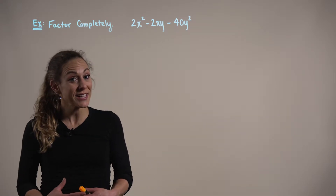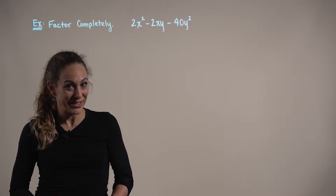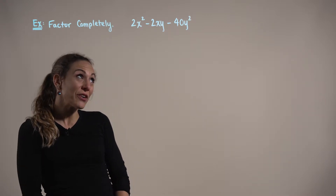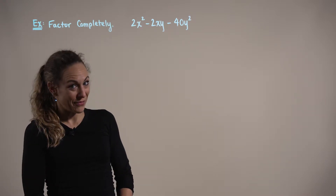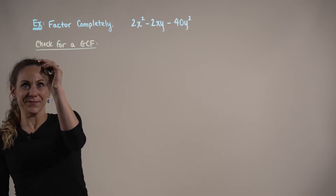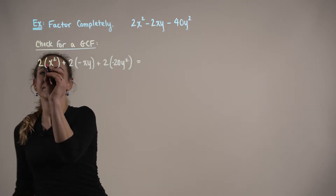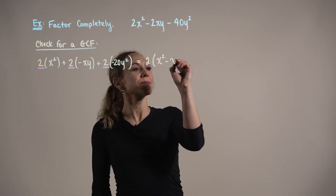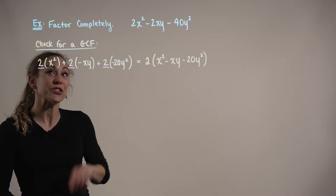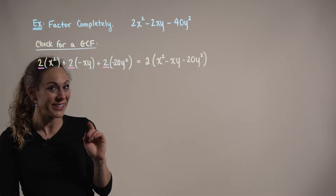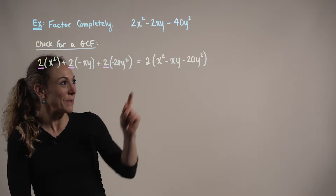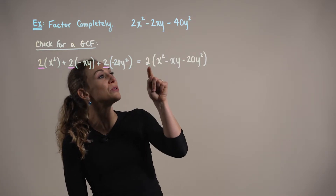Now, anytime we're factoring a polynomial expression, the very first thing that we want to do is check for a greatest common factor. When we look at each term in this polynomial expression, we realize that they have a greatest common factor of 2, which we pull to the front.